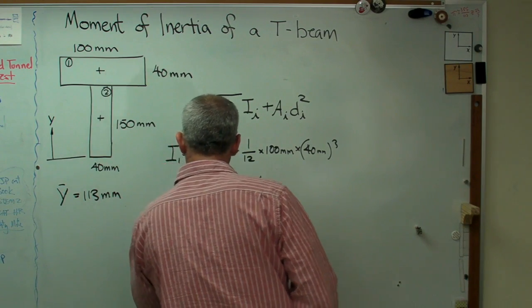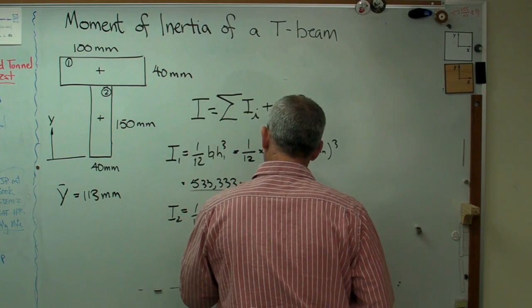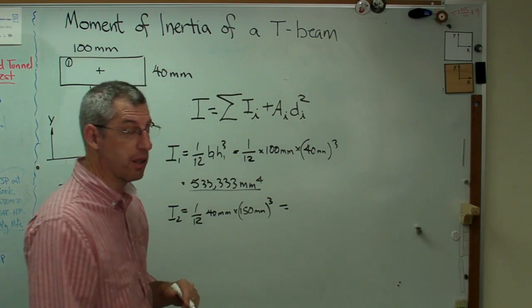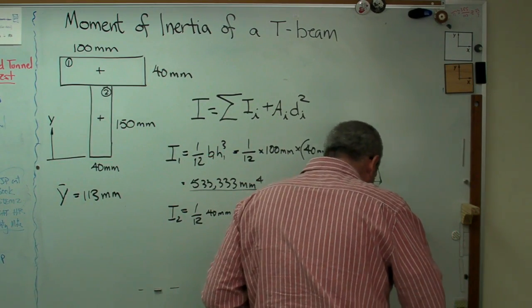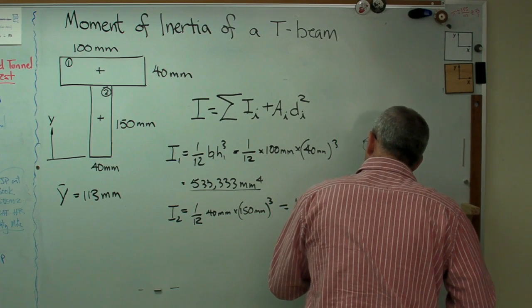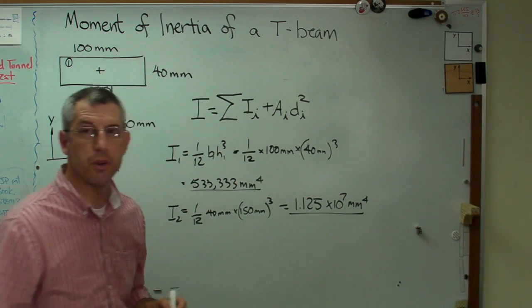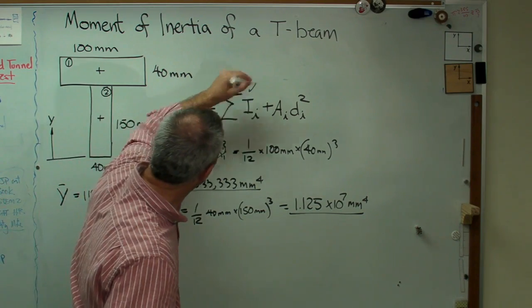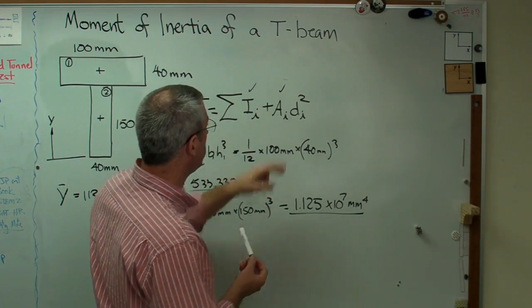I2 now is 1/12 times 40 millimeters times 150 millimeters cubed. This is going to be really big because we're cubing a much larger number here. And I'm actually going to go to scientific notation here because I don't want to have to write that many zeros. So there's that one, 1.125 times 10 to the seventh millimeters to the fourth. So we've got that part of the equation nailed down.